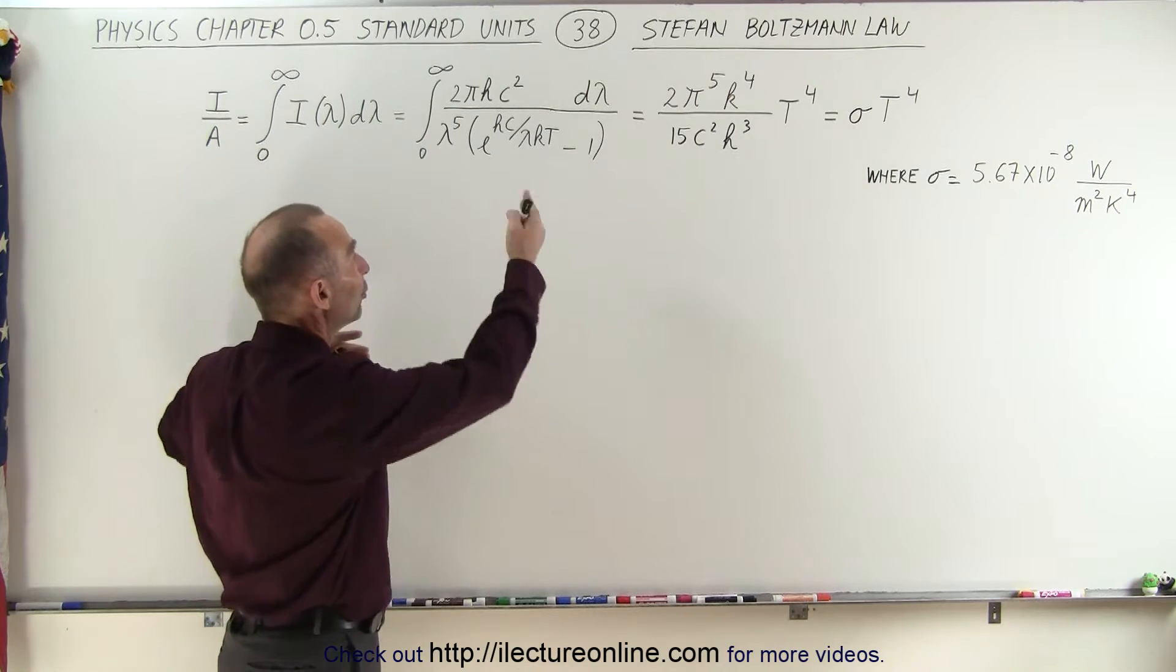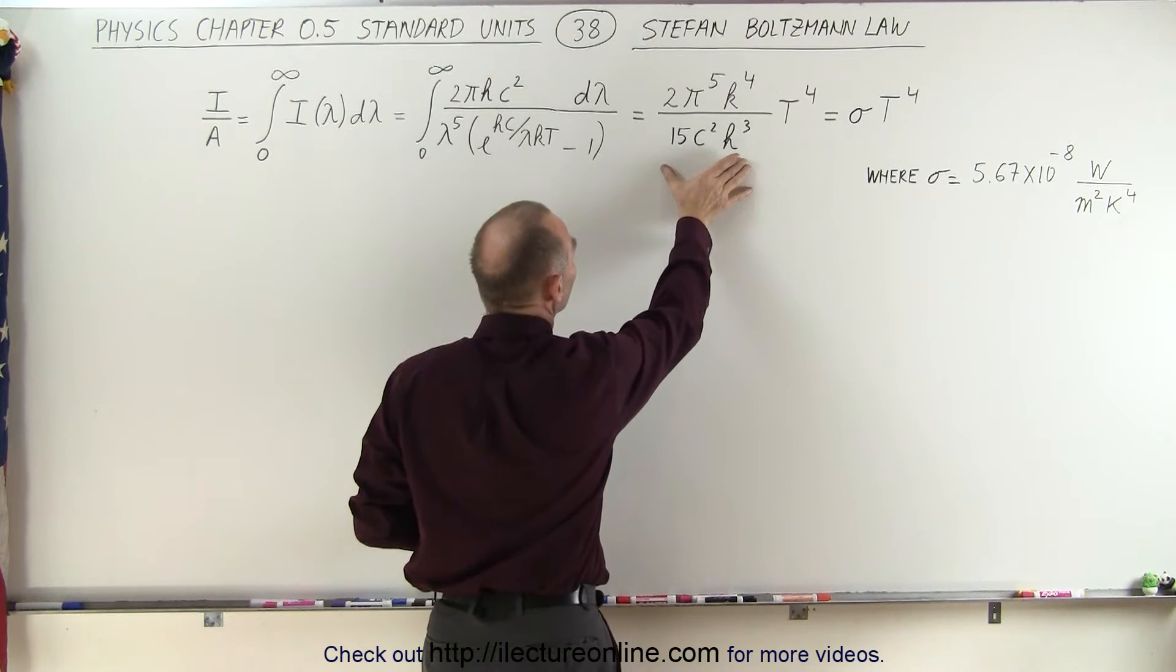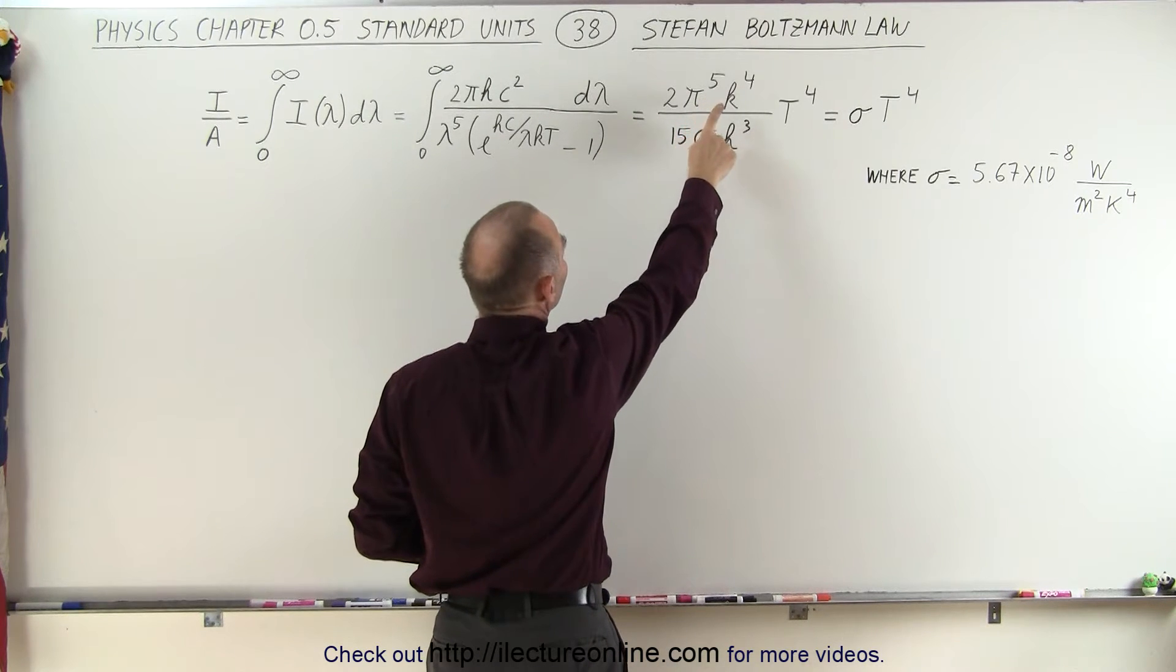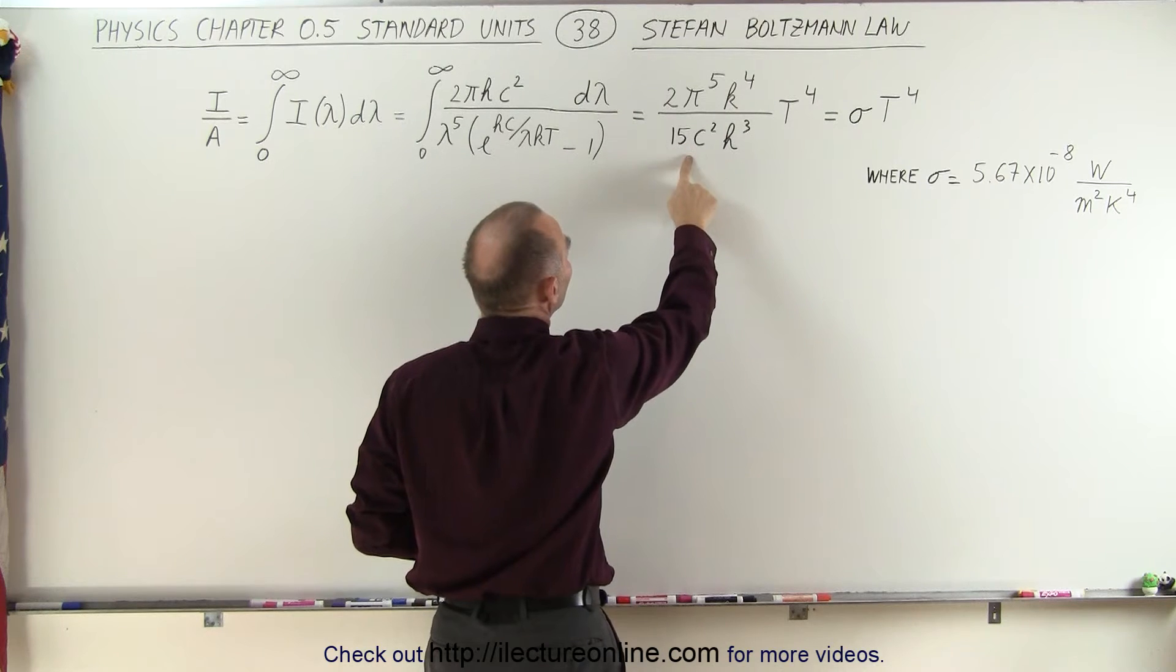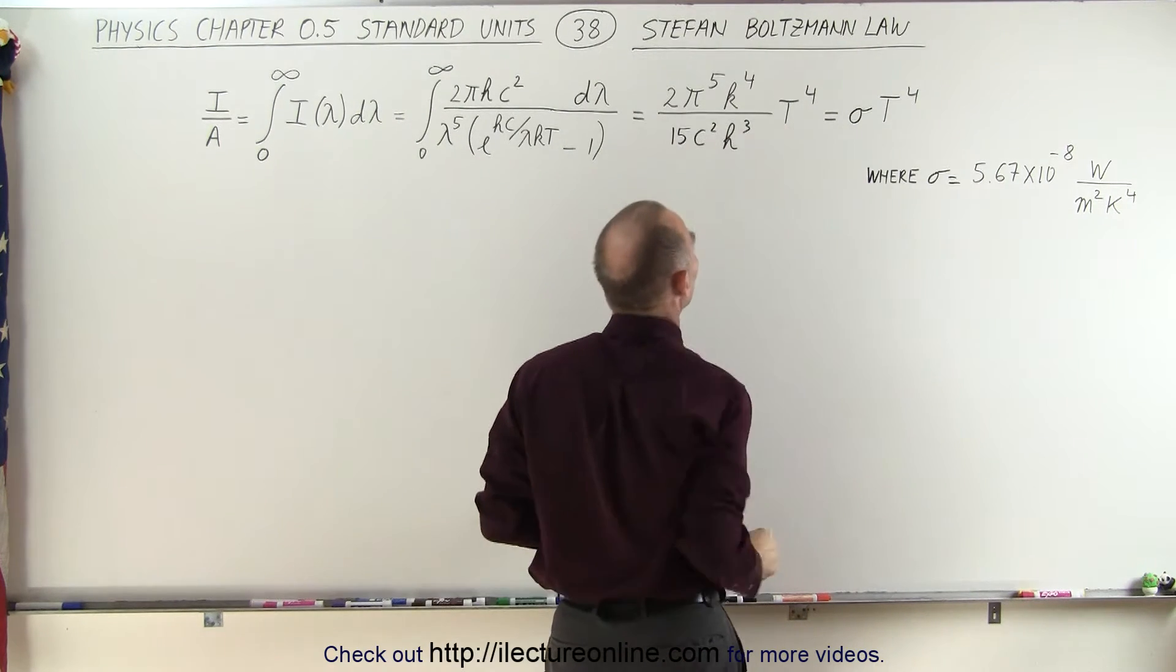We're not going to show you how to do the integral. It's a very complicated integral, but this is the result of that integral. It is 2π^5 k^4 divided by 15c^2 h^3 times T to the fourth power.